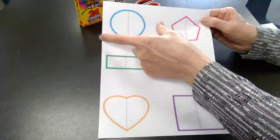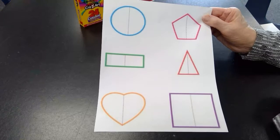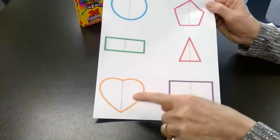On this shape right here, here's the line of symmetry. If you folded it together and put it right beside each other, it would match up perfectly. The same thing with the rectangle, the triangle, the heart, and the square. These are all lines of symmetry.